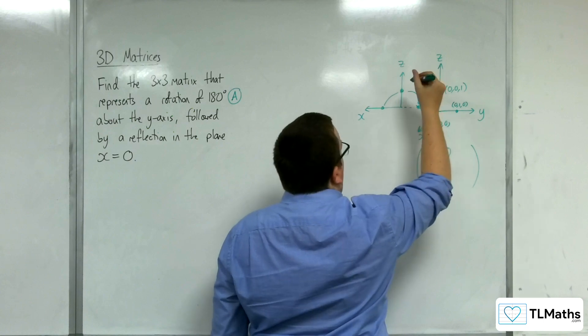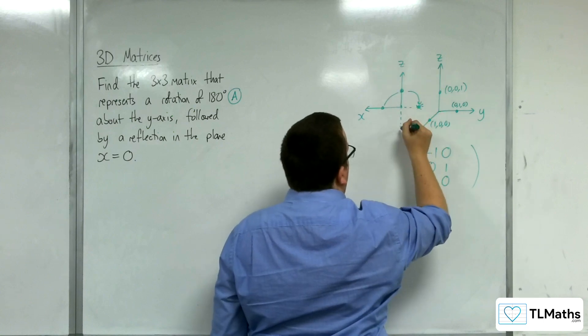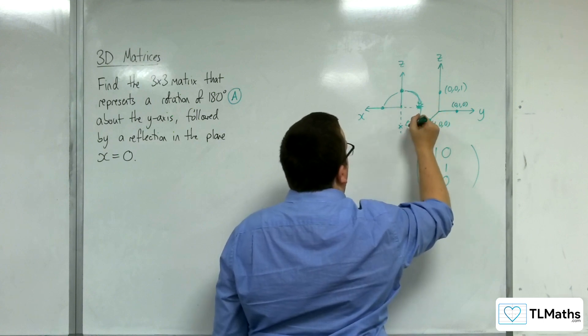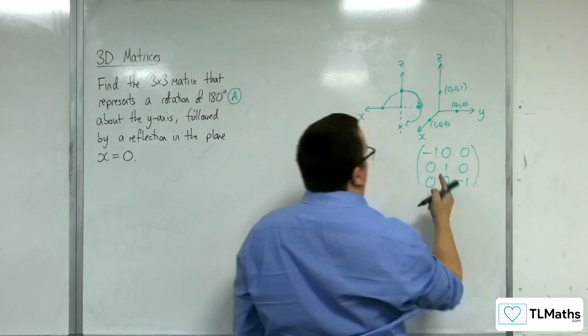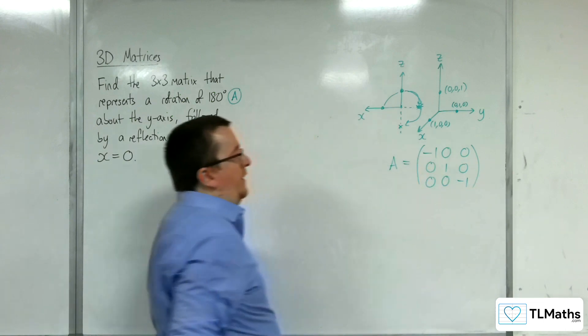And this point, 0, 0, 1, will get mapped round to here. So, right round here. To 0, 0, minus 1. So, I know that A is this matrix here.